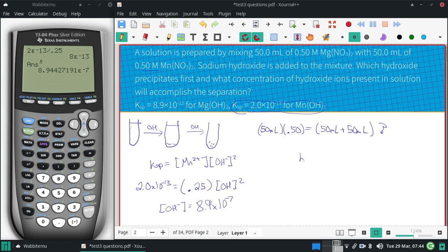And the highest it can be, we'll also figure that out for this problem. So the OH concentration is based on when the magnesium would start to precipitate out, and we'll solve it very similarly. This can be 0.25 as well.